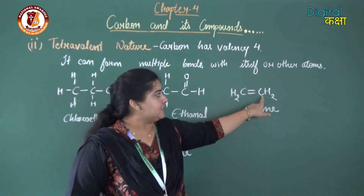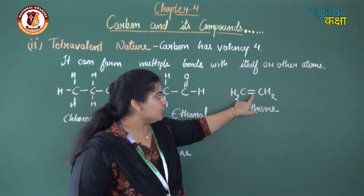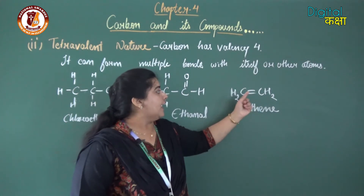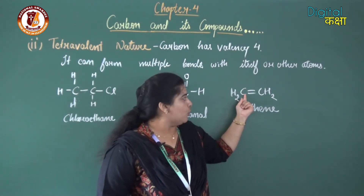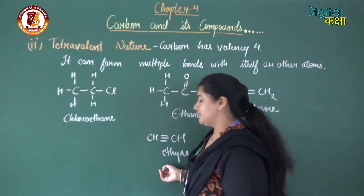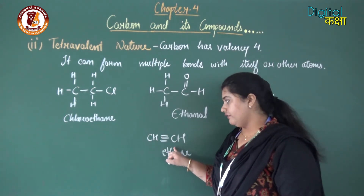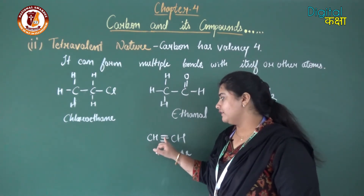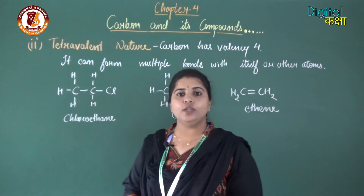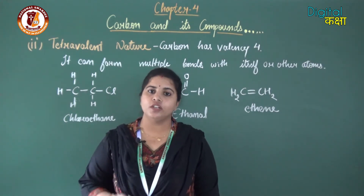In ethene (CH2=CH2), carbon forms a double bond with itself, proving it has a tendency to form multiple bonds. Checking the valency: this carbon has made two bonds in the double bond and two with hydrogen — four bonds total, proving its tetravalent nature. In ethyne (CH≡CH), carbon forms a triple bond with itself, and this carbon has made three bonds in the triple bond plus one bond with hydrogen — four bonds total — again proving its tetravalent nature. Carbon always makes four bonds as it has valency four and shares four electrons.